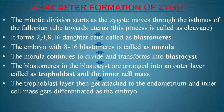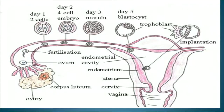The trophoblast layer gets attached to the endometrium and the inner cell mass differentiates into the embryo. In this picture you can see the different events after formation of the zygote: day 1 shows a 2-cell embryo, day 2 a 4-cell embryo, day 3 an 8 to 16-cell morula, and day 5 a blastocyst differentiated into the trophoblast and inner cell mass, which ultimately gets embedded in the endometrium leading to pregnancy.